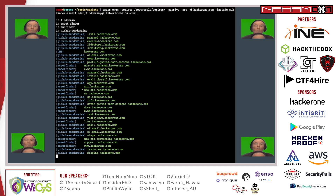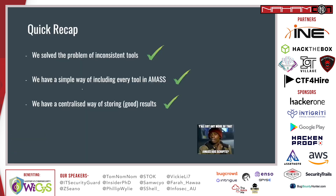Since I'm running a little bit out of time, let me recap the most important takeaways from this talk. We have solved the problem of inconsistent tools by combining them all in AMOS. We found a simple way of including every tool that is out there in the AMOS environment, and we have a centralized way of storing good results, plus DNS validation and all the other magic AMOS has to offer. Now, AMOS is not yet supporting every data source out there, but it is very much capable of doing so.